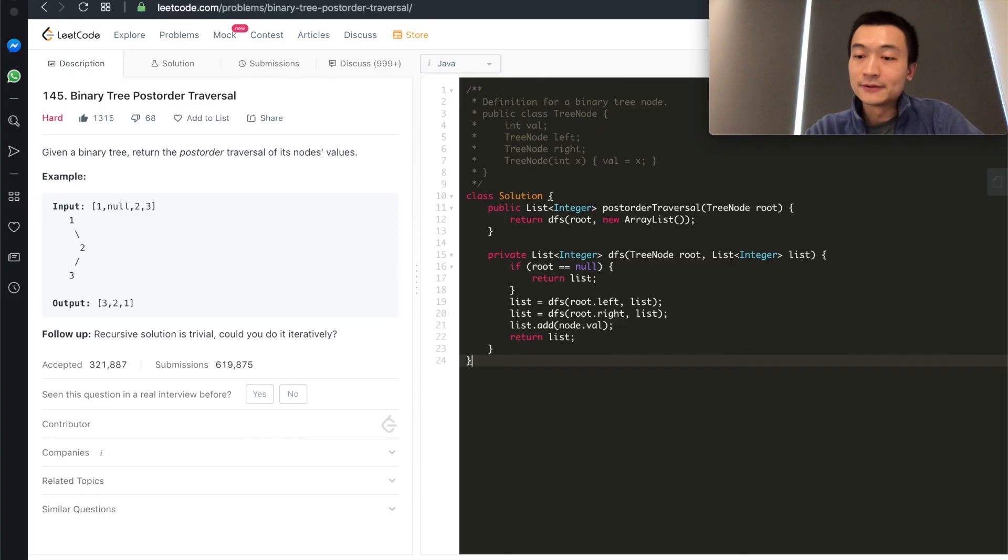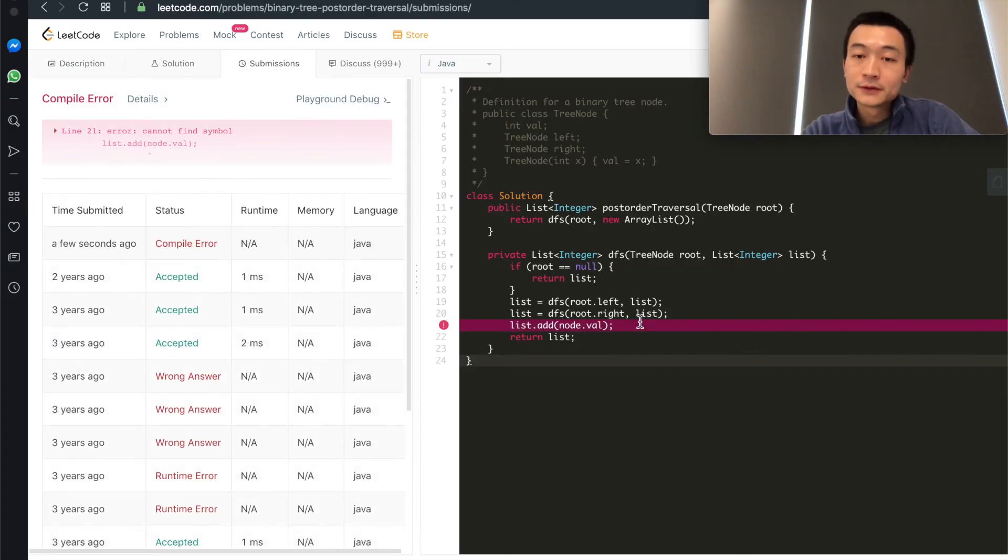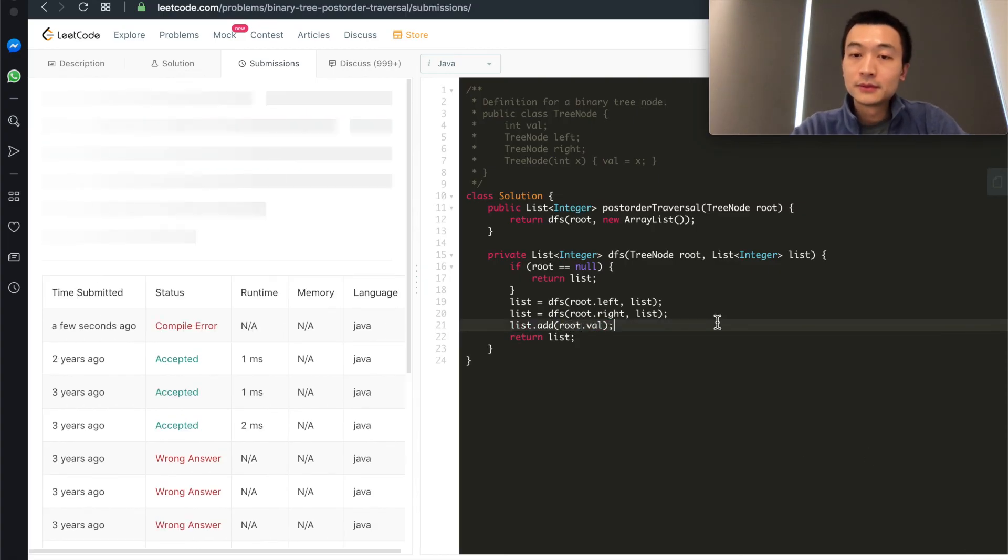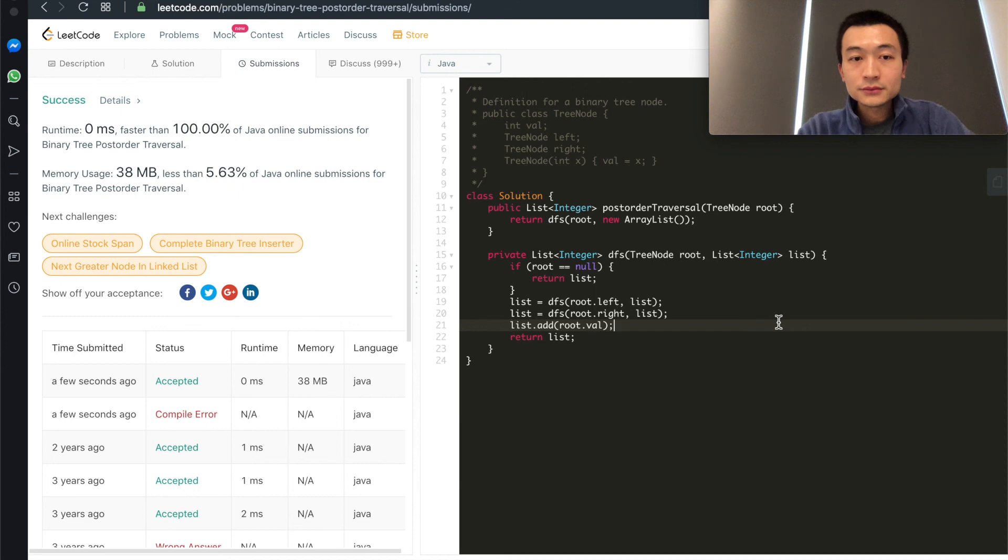Now let's hit submit and see. Oops, this is wrong. It should be root. All right, accepted. Yeah, this is the program. Recursive solution is very straightforward and intuitive. I hope it does make sense.